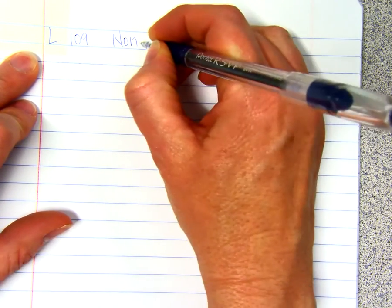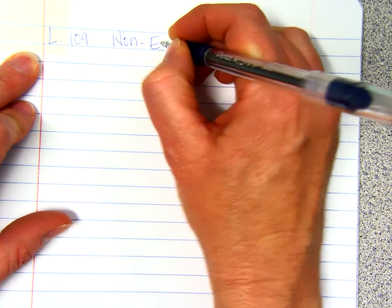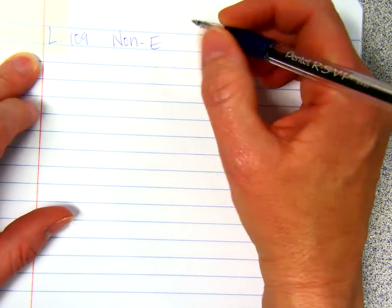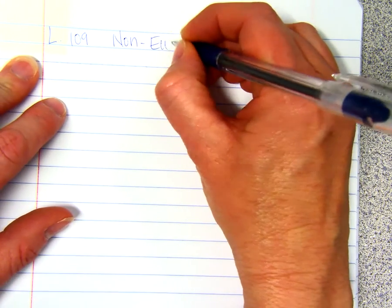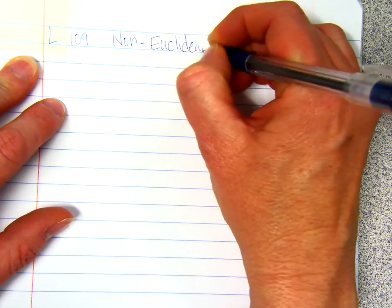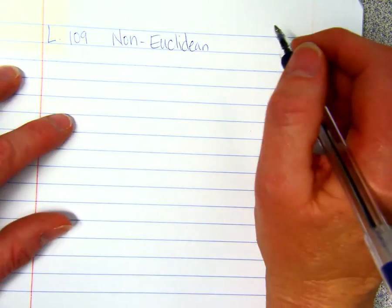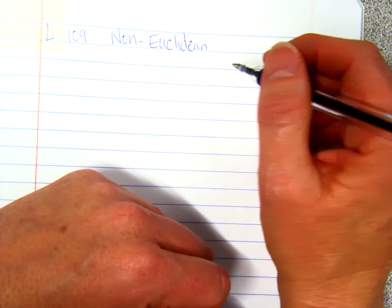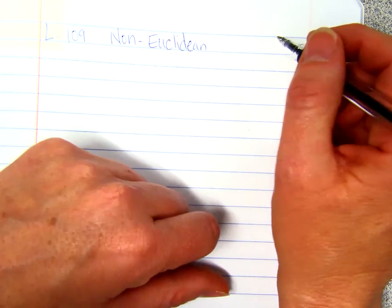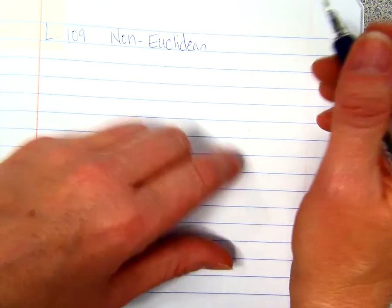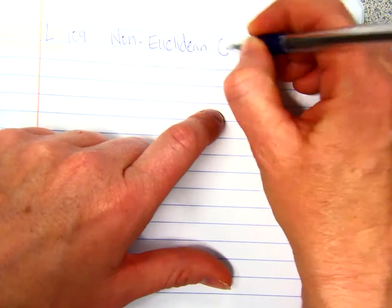All of the geometry that we have done up until this point is called Euclidean geometry. It's called that because it was named by the Greek mathematician Euclid. He is the one that described the systems of geometry.